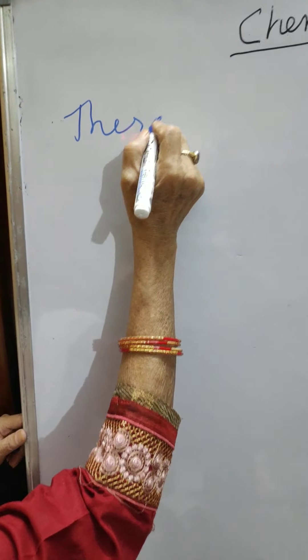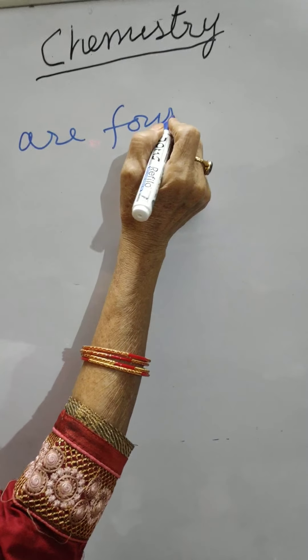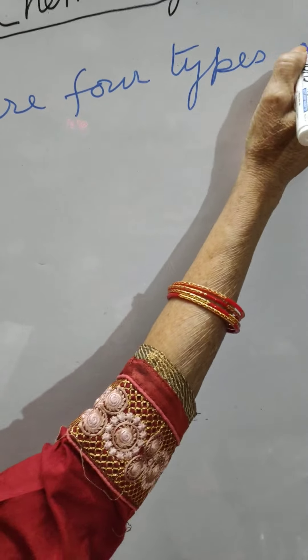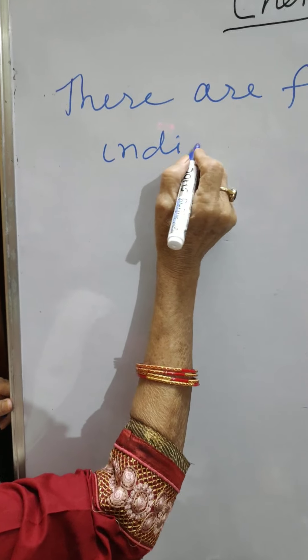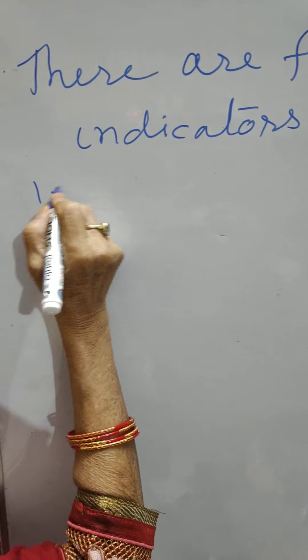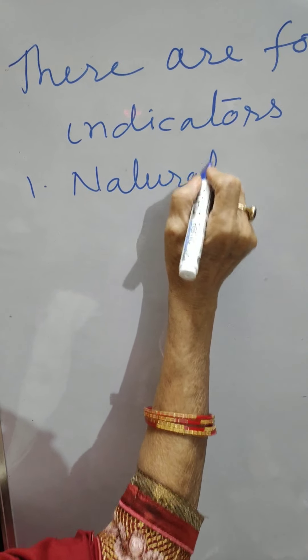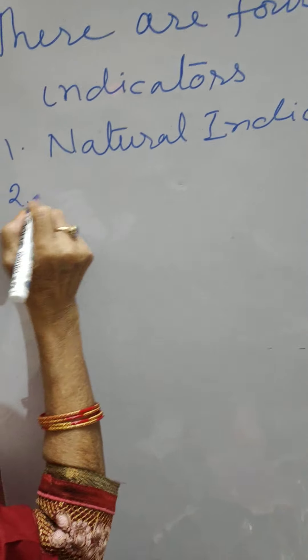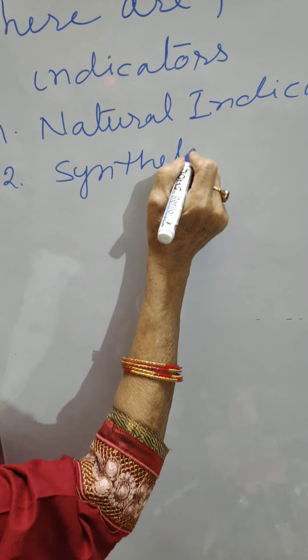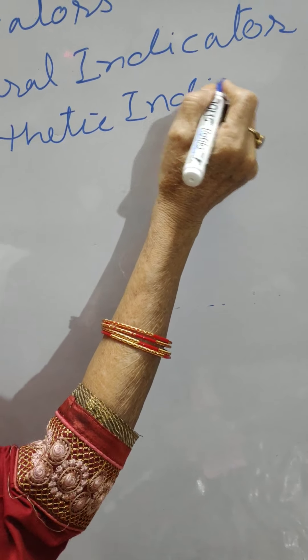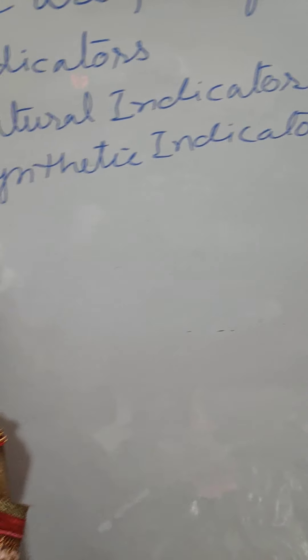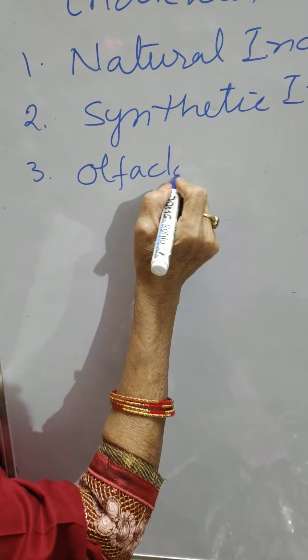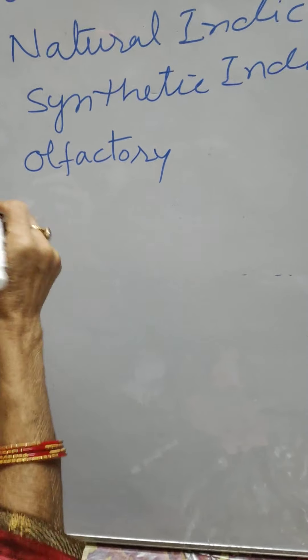Today I shall take up the universal indicator, which I am going to write on the blackboard. There are 4 types of indicators: 1st natural indicators, 2nd synthetic indicator, 3rd olfactory — olfactory means smell — with the help of smell we can identify the substance. Olfactory indicators.